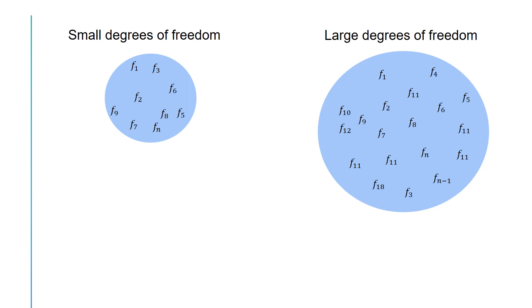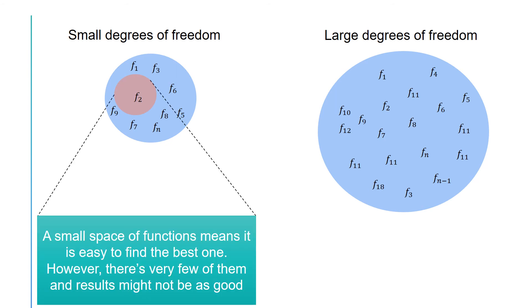Let's try to look at this closely. Here, suppose each set shows the collection of functions in our model. The one on the left includes a smaller number of functions. That is, it represents a model with smaller degrees of freedom. The one on the right is a bigger space and has a larger number of functions, representing a model with larger degrees of freedom. If you have a small space of functions, it is easy to find the best one. However, there are very few of these functions in our model in the first place, so the best function might not be good enough.